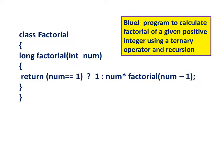BlueJ program to calculate the factorial of a given positive integer using a ternary operator and recursion. Class factorial: long factorial(int num) — return num == 1 ? 1 : num * factorial(num - 1).